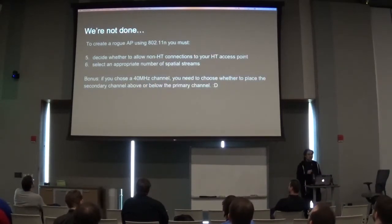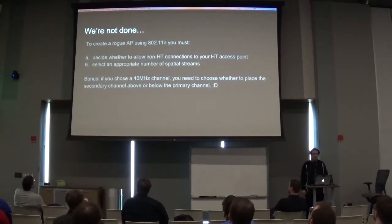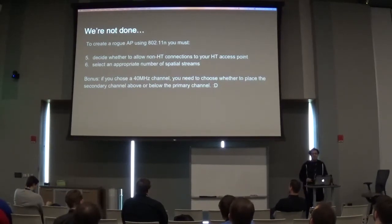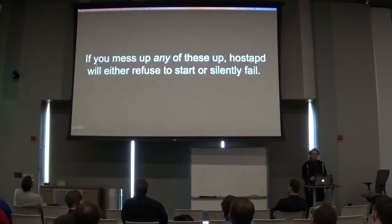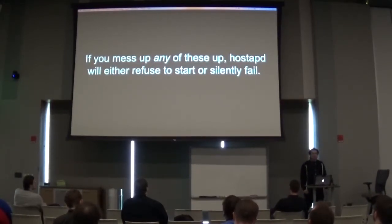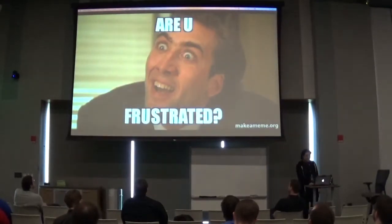And we're not done yet. You also have to decide whether to allow non-HT connections to your HT access point — there are like three or four different ways to configure that. You also have to select an appropriate number of spatial streams for your hardware. And if you chose a 40 megahertz channel, you need to decide whether to place the secondary channel above or below your primary channel, because if your primary channel is channel 1 and you try to put the secondary channel below it, you'll go off the edge of the spectrum and it won't work. If you get any of this wrong, hostapd — the utility you use to create access points — will either refuse to start or just silently fail.